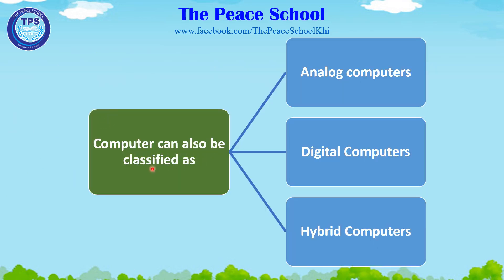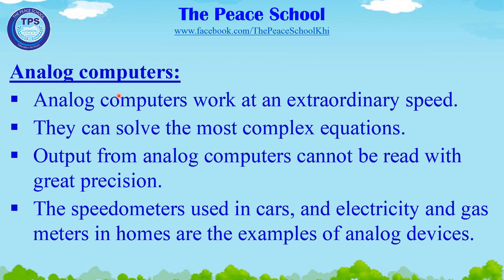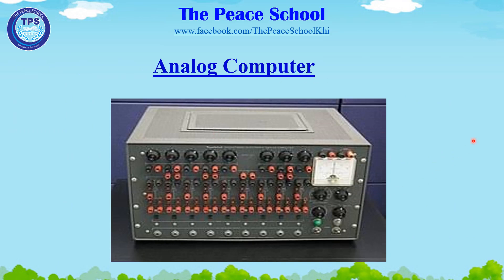Computers can also be classified into analog computers, digital computers, and hybrid computers. Analog computers work at an extraordinary speed and can solve the most complex equations. However, output from analog computers cannot be read with great precision. The speedometers used in cars and electricity and gas meters in homes are examples of analog devices.